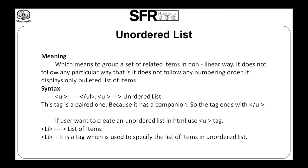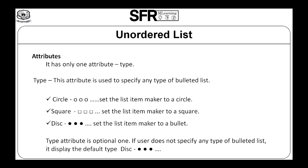If a user wants to create an Unordered List in HTML, use the UL tag. LI denotes list of items. It is a tag which is used to specify the list of items in an Unordered List. If a user wants to create an Unordered List in a web page, the list of items should be enclosed within the LI tag.